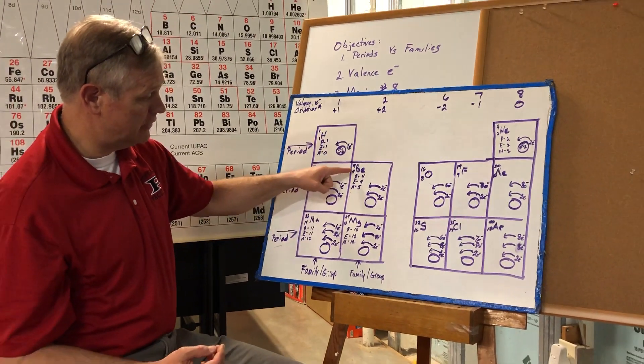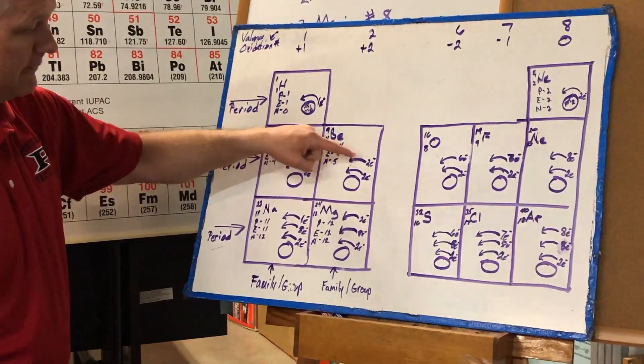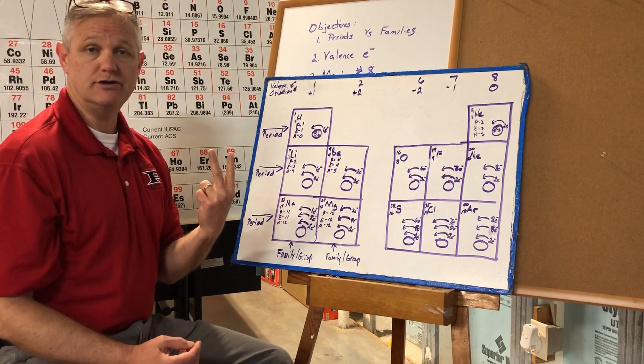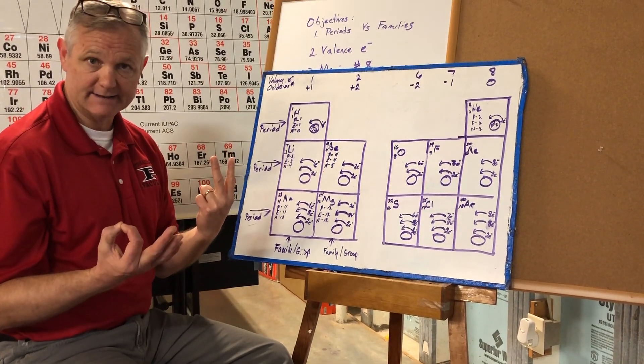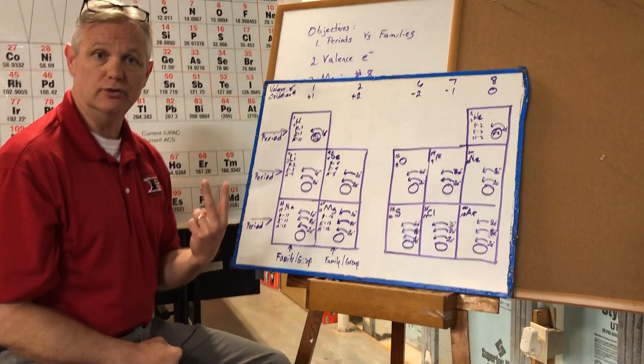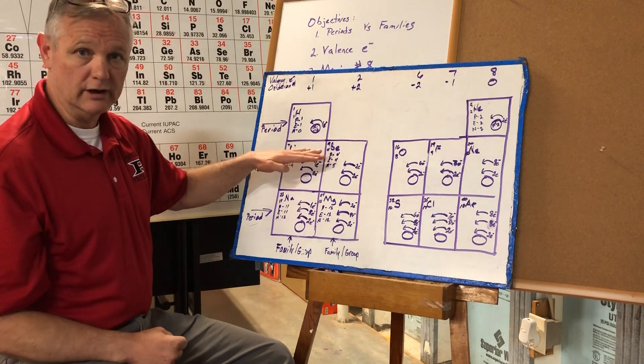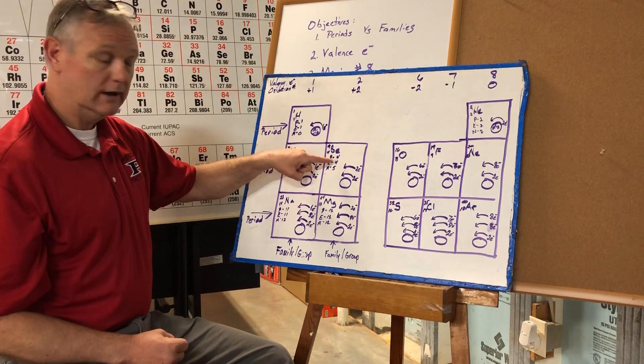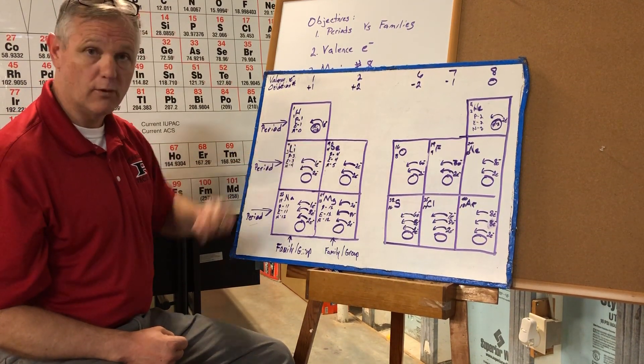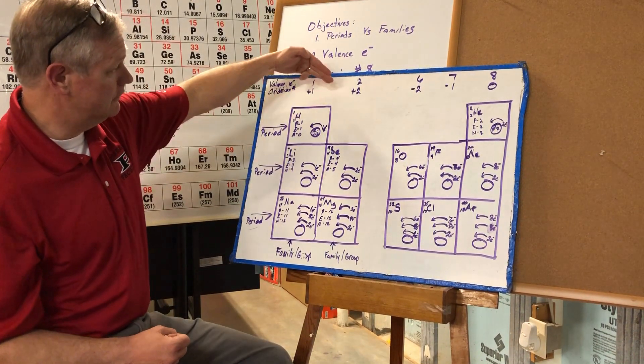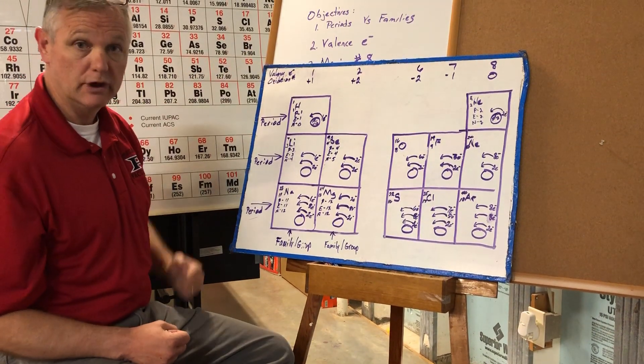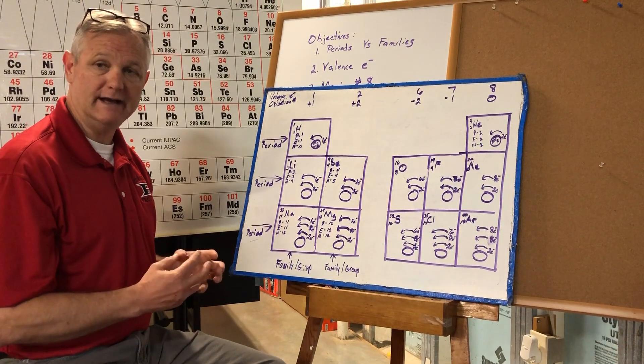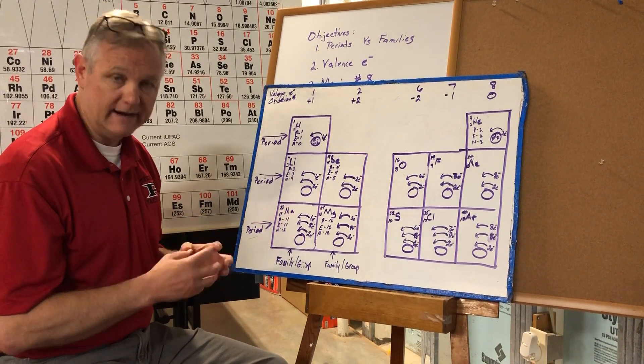Now I come back over here and I look at beryllium. Beryllium has two valence electrons. So is it easier to lose two, or is it easier to gain six? The answer is it's easier to lose two. So if I lose two electrons, that means that now I have only two electrons versus the four protons. So I have an overall charge of positive two. That's its oxidation number. The oxidation number is based upon the final charge.